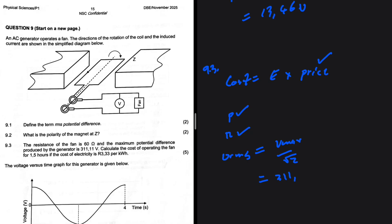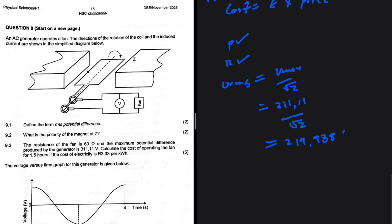That is going to be 311.11 divided by square root of two. Let me put that in my calculator: 311.11 divided by square root of two, that is 219.988 volts. That is my V_rms in volts.